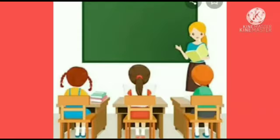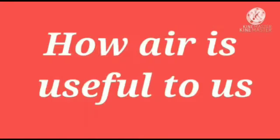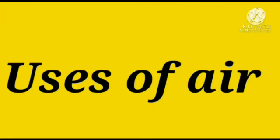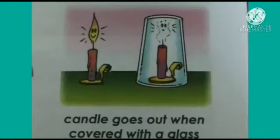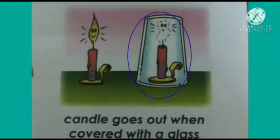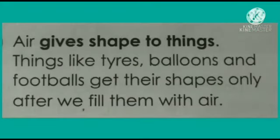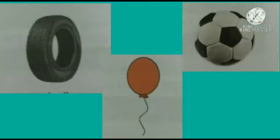Up to now we have learned about different forms of moving air. Now let us learn how air is useful to us. All living things need air to breathe. We also need air for burning things. For example, when a burning candle is covered with a glass, it blows out after some time because there is no air left inside the glass to keep the candle burning. Air gives shape to some things — like tires, balloons, and footballs.